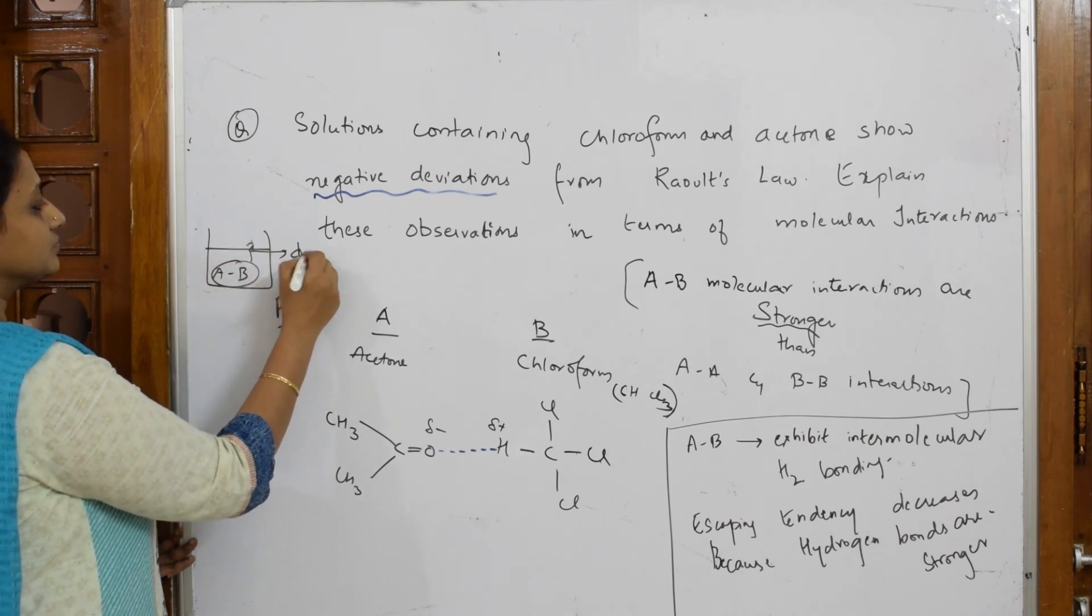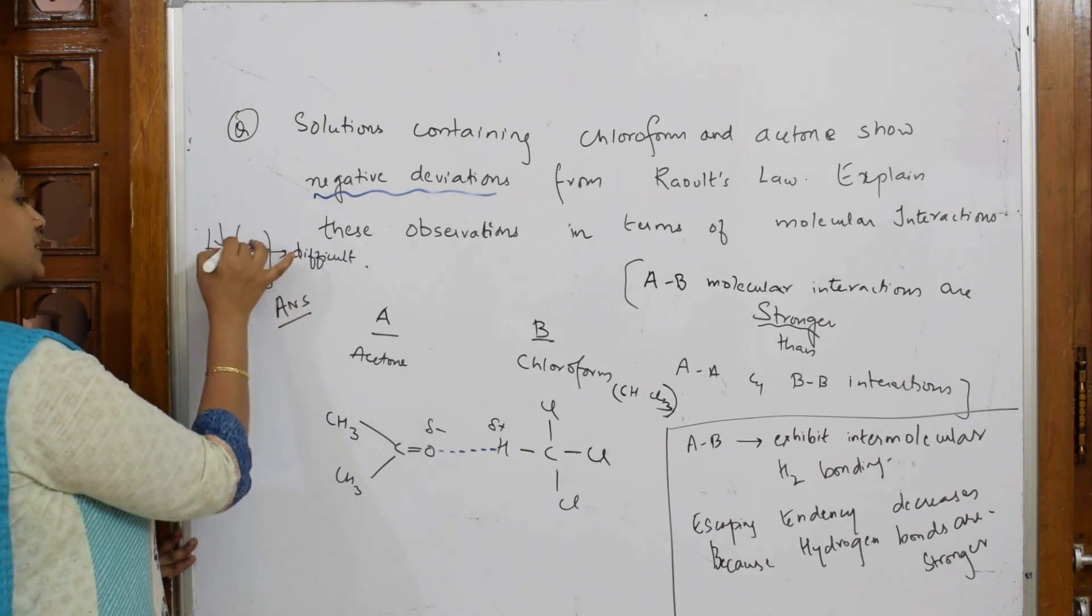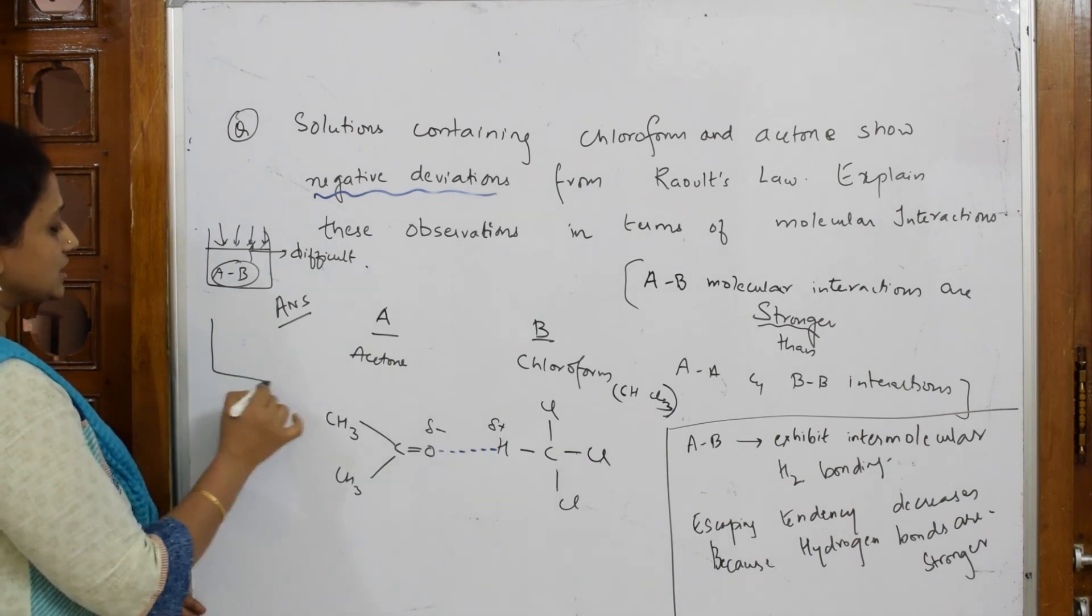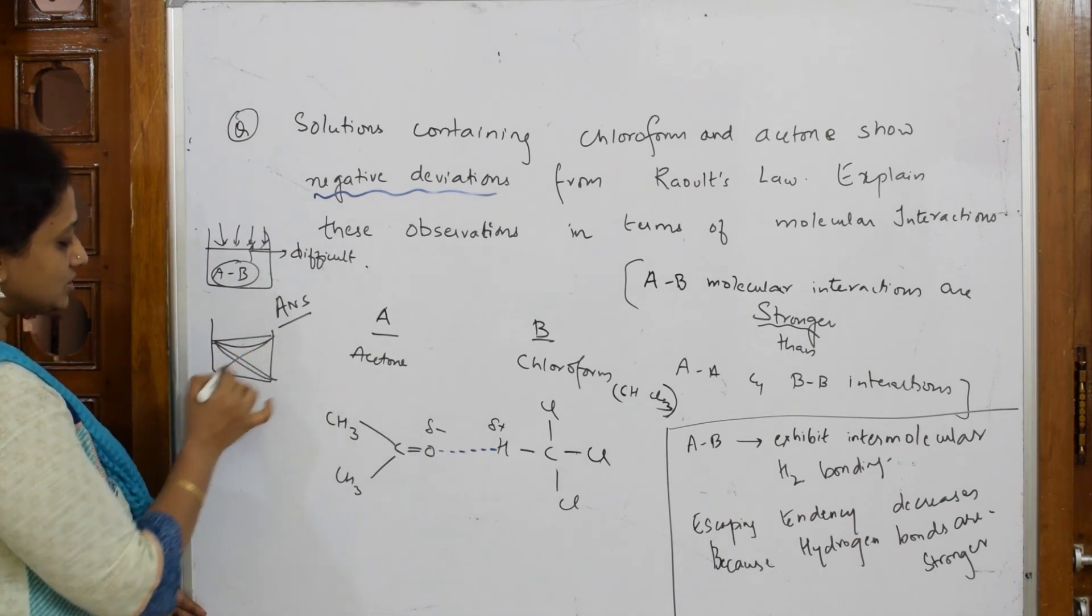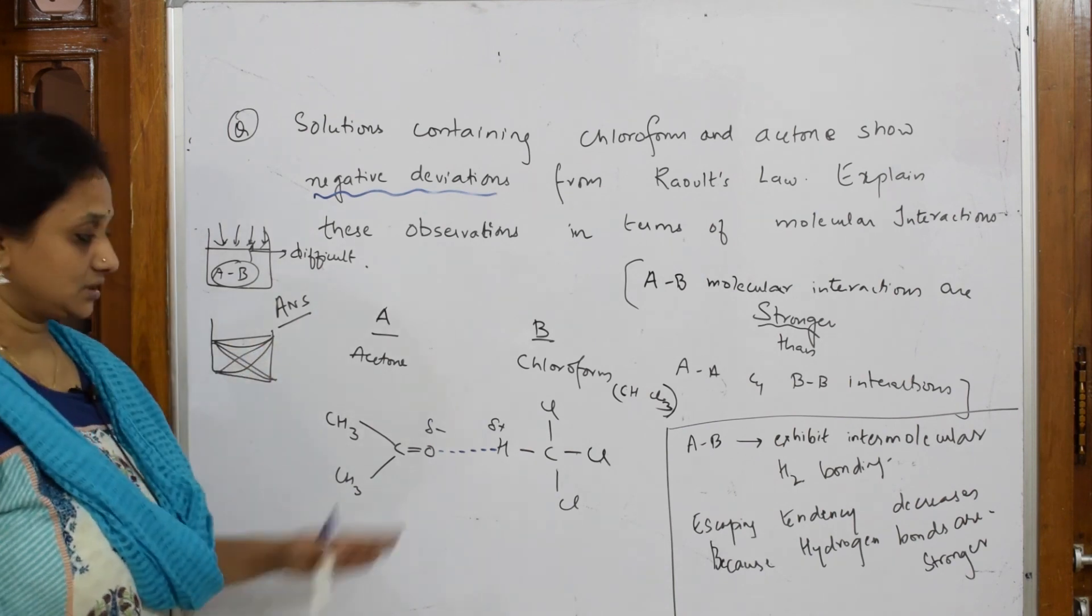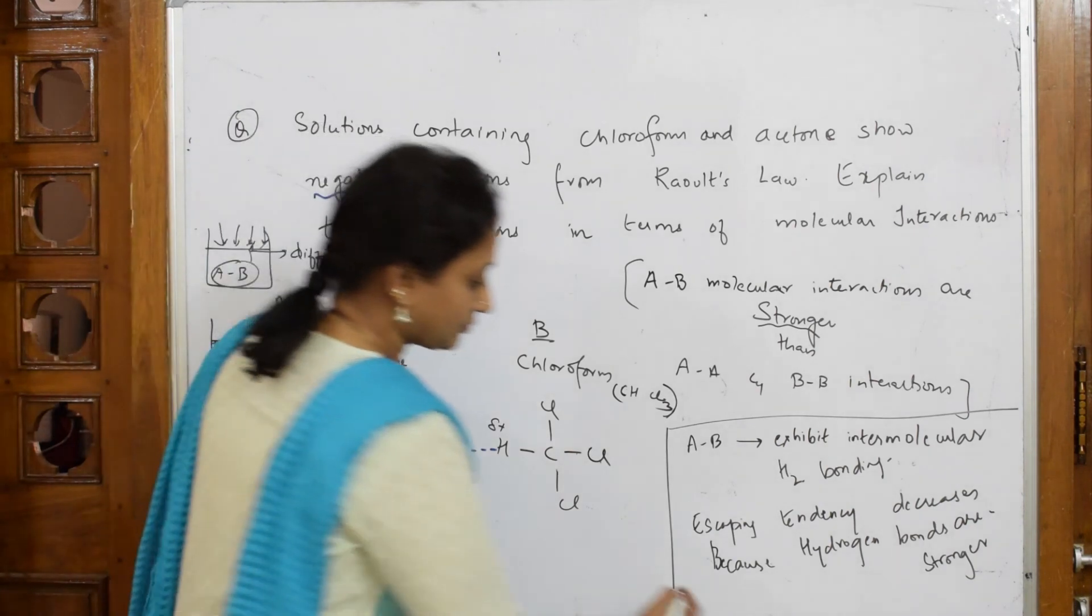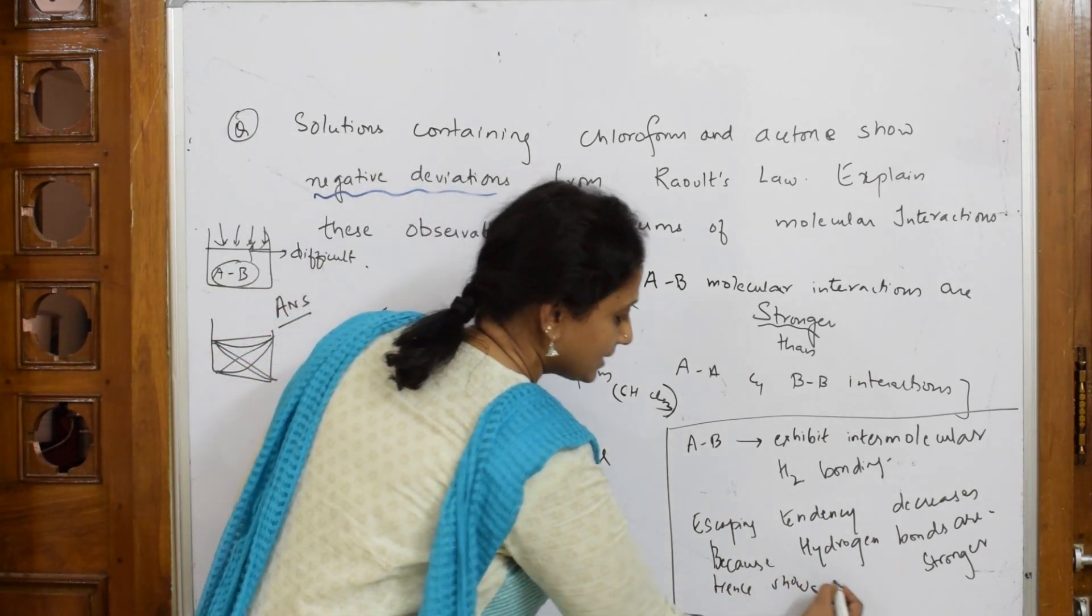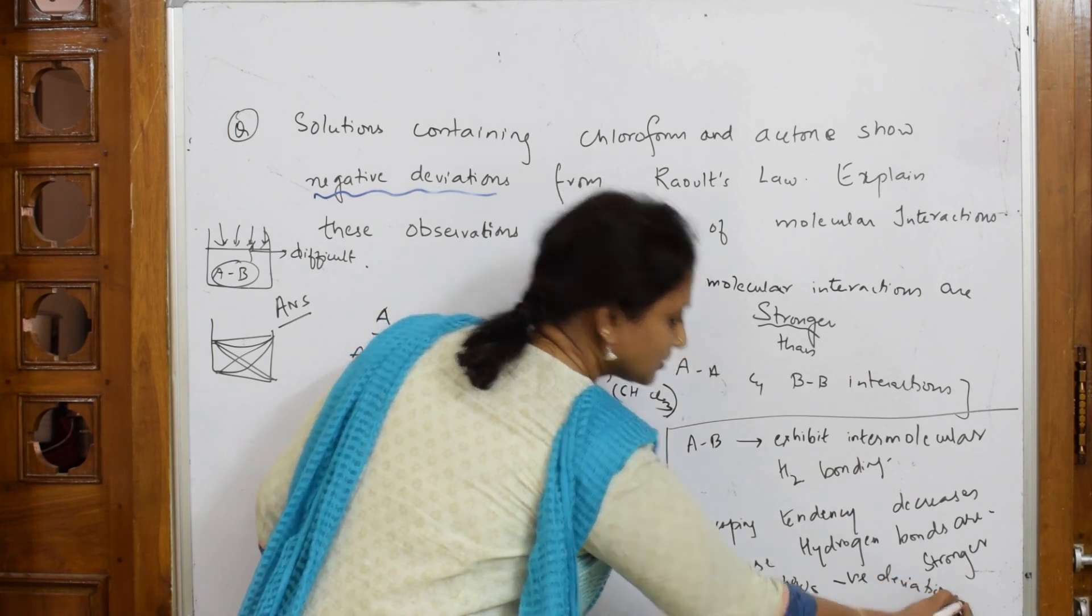When it is difficult, exerting pressure back and escaping will also be less. That's why it shows in the graph negative deviation. This is your concept - hence it shows negative deviations. That's it.